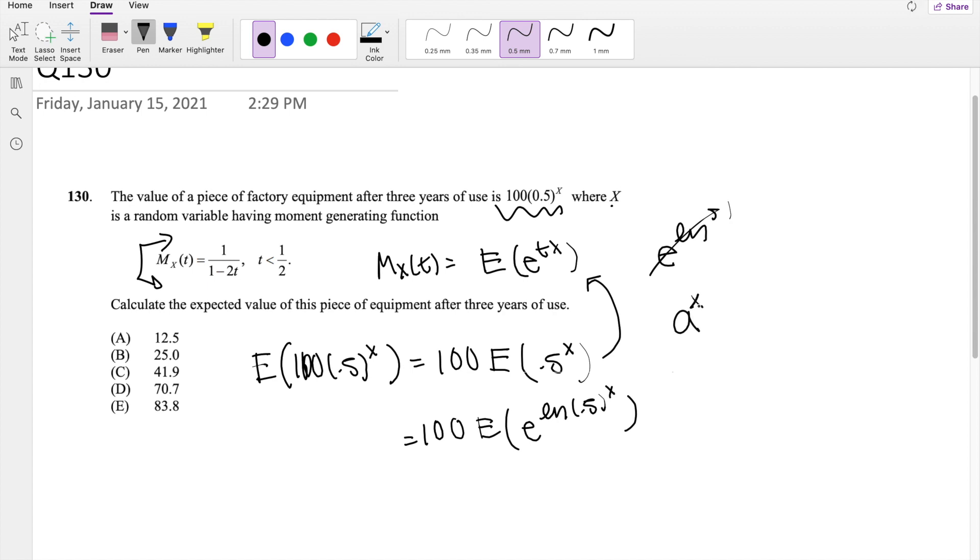If a constant is raised to an X, this is equal to X times natural log of A. So same idea here. If it's 0.5 raised to an X, when you apply the natural log rule, you can bring that X down to next to the natural log of 0.5. So using that, we can say 100 times E to the X times natural log of 0.5.